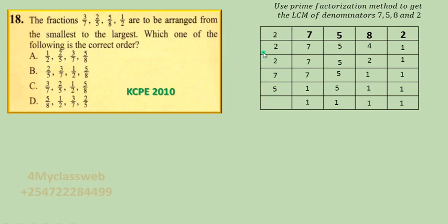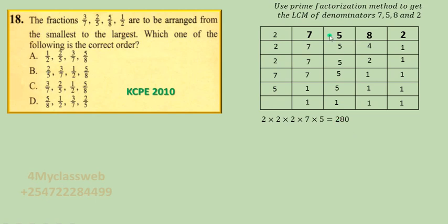If you multiply these prime numbers together — that is 2 × 2 × 2 × 7 × 5 — you get 280. So 280 is the LCM of the four denominators 7, 5, 8, and 2.